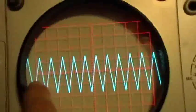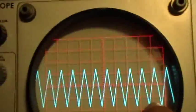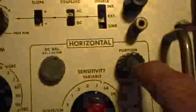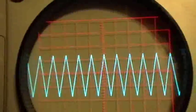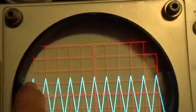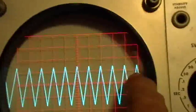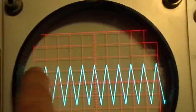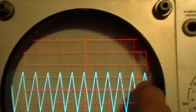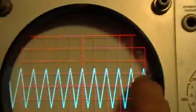So what I do is I use the horizontal position control to set one of those peaks right at the beginning of the graticule. Now I know that I want 10 peaks to happen in 10 milliseconds. I go - and this graticule is 10 centimeters wide: 1, 2, 3, 4, 5, 6, 7, 8, 9, 10.